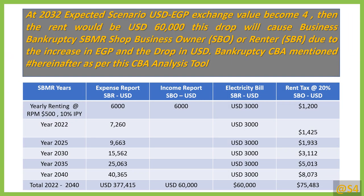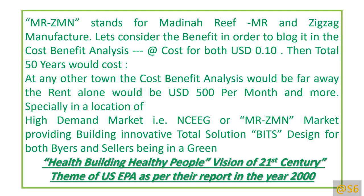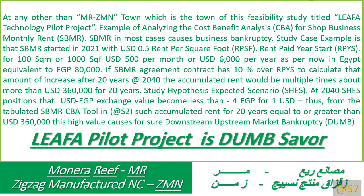Businesses will go bankrupt because of the calculation tool in sheet 2, which calculates over 20 years the effect of money exchange rate changes. The assumption is that even if the dollar-to-Egyptian pound rate stays the same, it will still lead to bankruptcy.